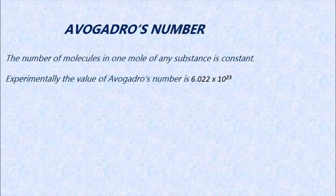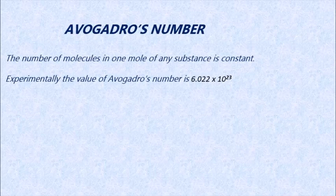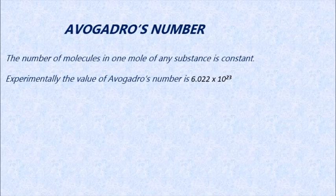Next is Avogadro's number. The number of molecules in one mole of a substance is constant. This number was discovered by an Italian scientist, Avogadro, and is therefore named after him. The symbol is Nₐ and the number is 6.022 × 10²³. Just as one dozen contains 12 items, one mole of water (18 grams) contains 6.022 × 10²³ molecules of water.